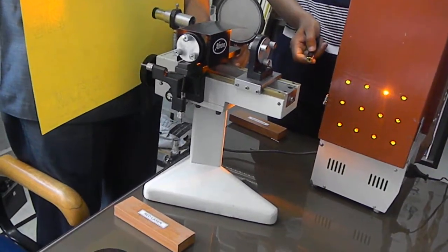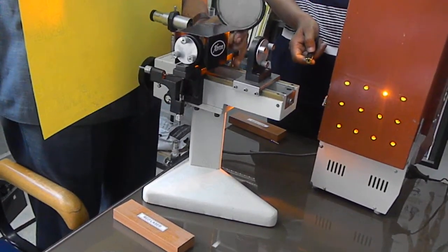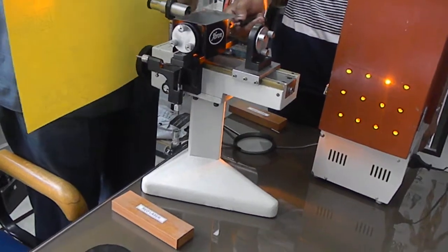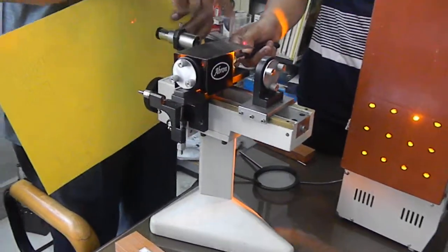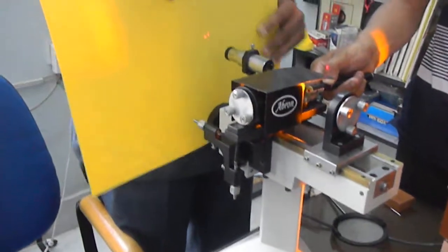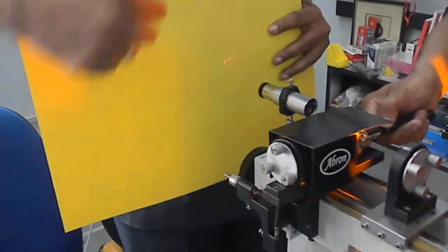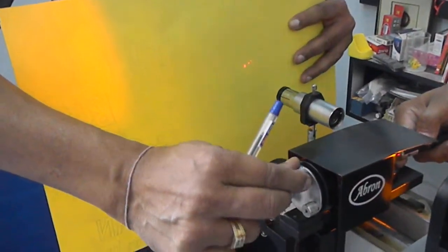This is the Michelson interferometer. First of all, we remove this through the diffuser section. You put this laser and you can see the spots. There are three spots visible. One you can adjust by this.